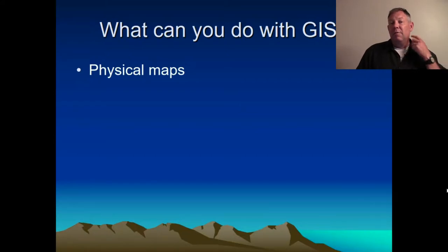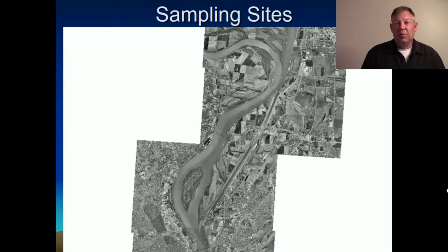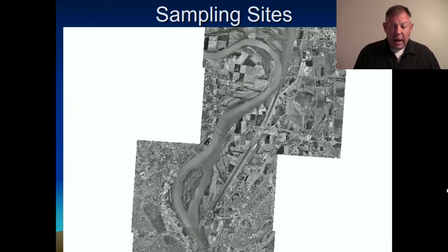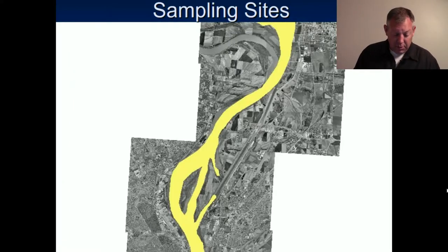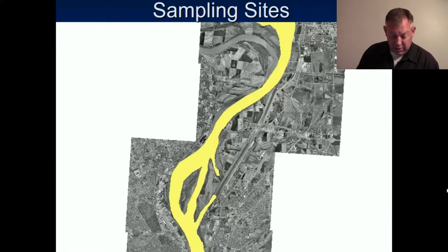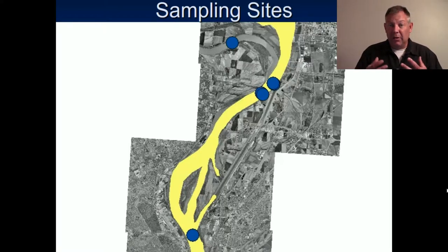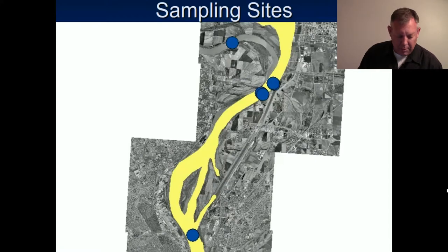We can make physical maps of a physical area. Here's an old aerial photo of where the Missouri River runs into the Mississippi just upstream from St. Louis — a place we used to sample for sturgeon. We often have sampling sites and want a map to show people where we sampled. We have a shapefile representing the river so we can show the river and our sampling areas on it, which is much better than just giving someone coordinates.